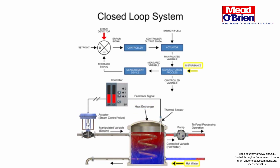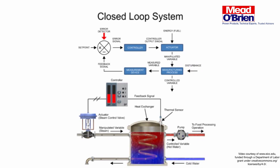Disturbance is defined as a change in the manufacturing process resulting in a change in the control variable. Disturbances occur when the water temperature suddenly changes or stops flowing. Closed-loop control and the associated terminology are common within manufacturing systems where precise control is required.